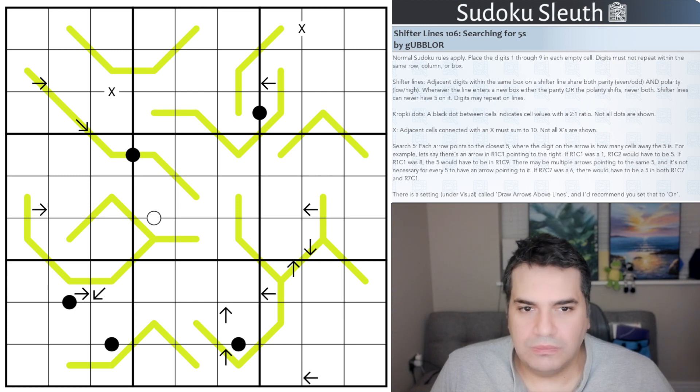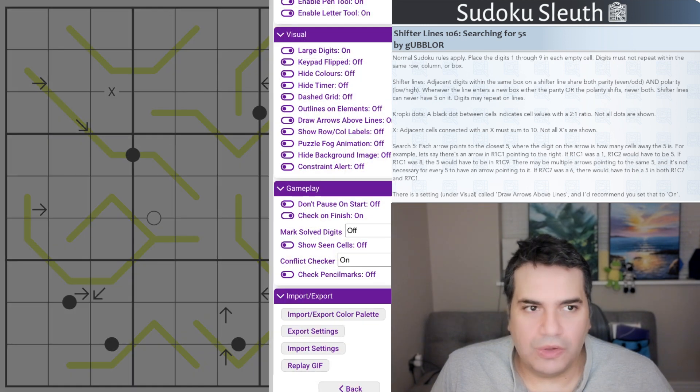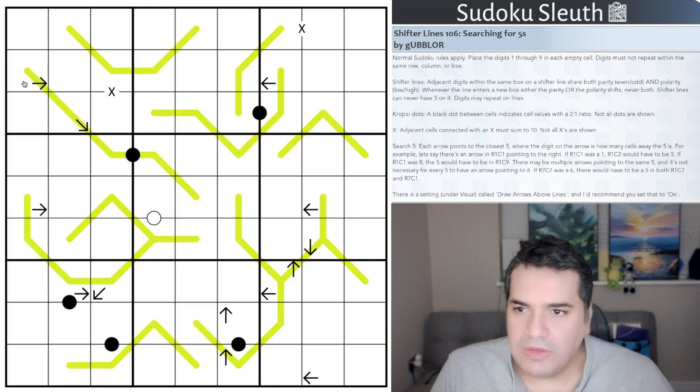There is also a setting, and I actually left the language in here, under visual in the link to the CTC application that says draw arrows above lines. And the recommendation by Gobler is to turn it on. Let's see if I can actually show you what this is. Essentially, under the visual section, where does it have draw arrows above line? And you can see mine is actually toggled on. When I first loaded the puzzle, some of these arrows were actually hidden under the line, making it fairly difficult to see. So make sure you turn that on so you can actually stand a good chance of solving today's puzzle.